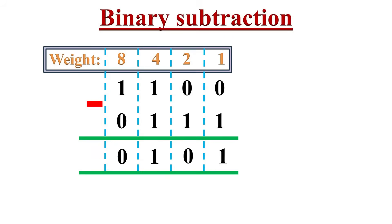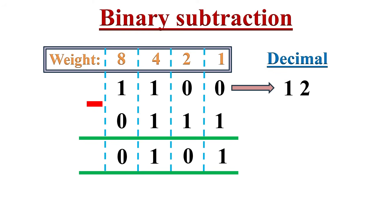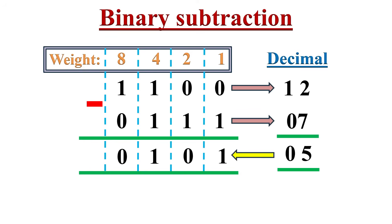Now let's convert them into the decimal number system to check the answer. The decimal equivalent of the first binary number 1100 equals 8 plus 4 plus 0 plus 0, which equals 12. The second binary number 0111 equals 4 plus 2 plus 1, which is 7. So 12 minus 7 equals 5, which is nothing but 101 in the binary number system. Hence our subtraction is correct.